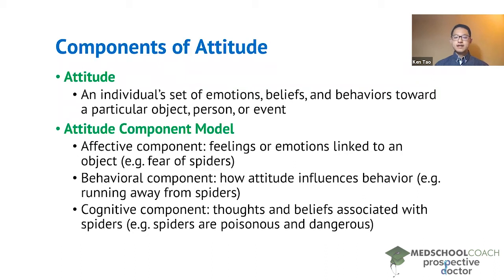The cognitive component is the thoughts and beliefs associated with spiders — the reasons why someone might have a fear of spiders and want to run away, because of the attributes they've associated with spiders.